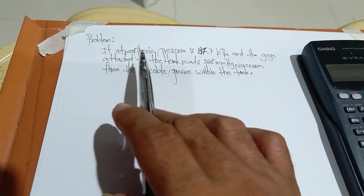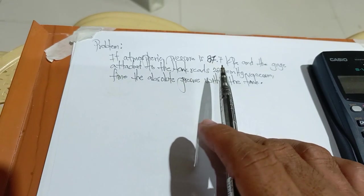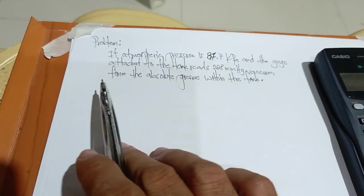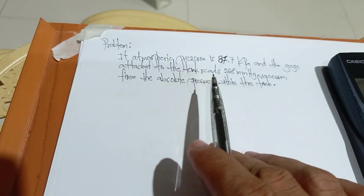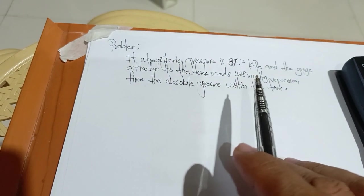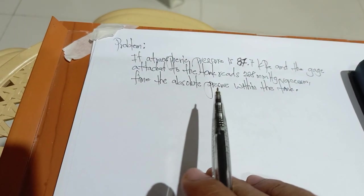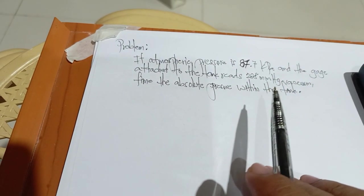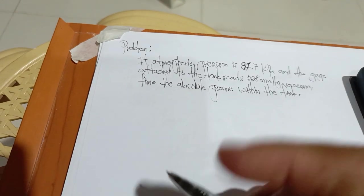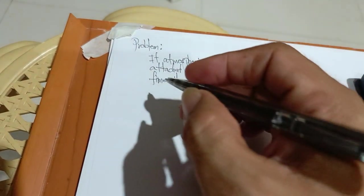If atmospheric pressure is 87.7 kilopascal and the gauge attached to the tank reads 288 millimeters mercury vacuum, find the absolute pressure within the tank.